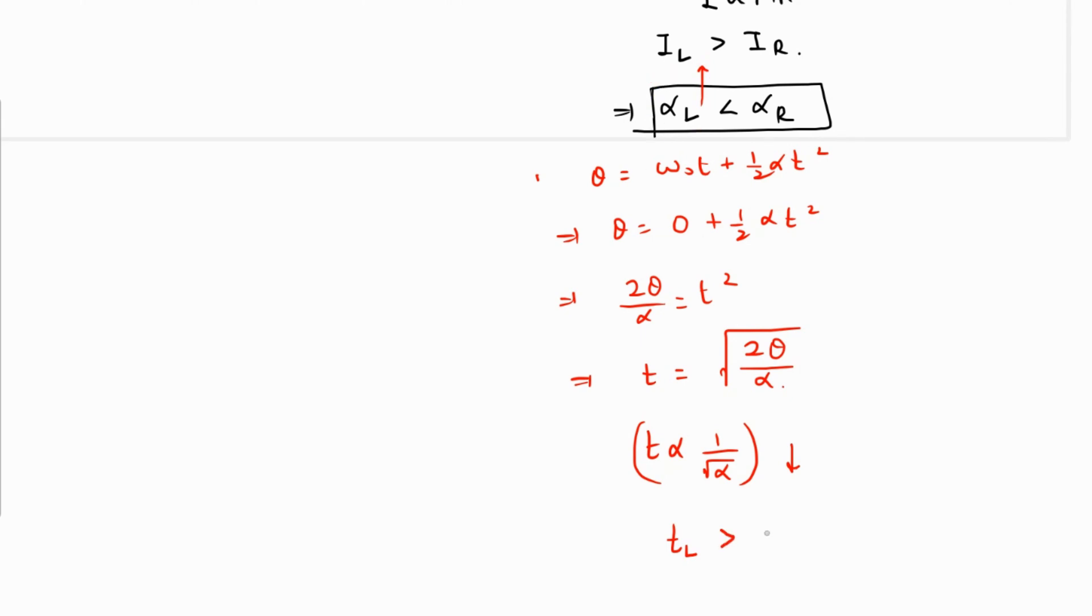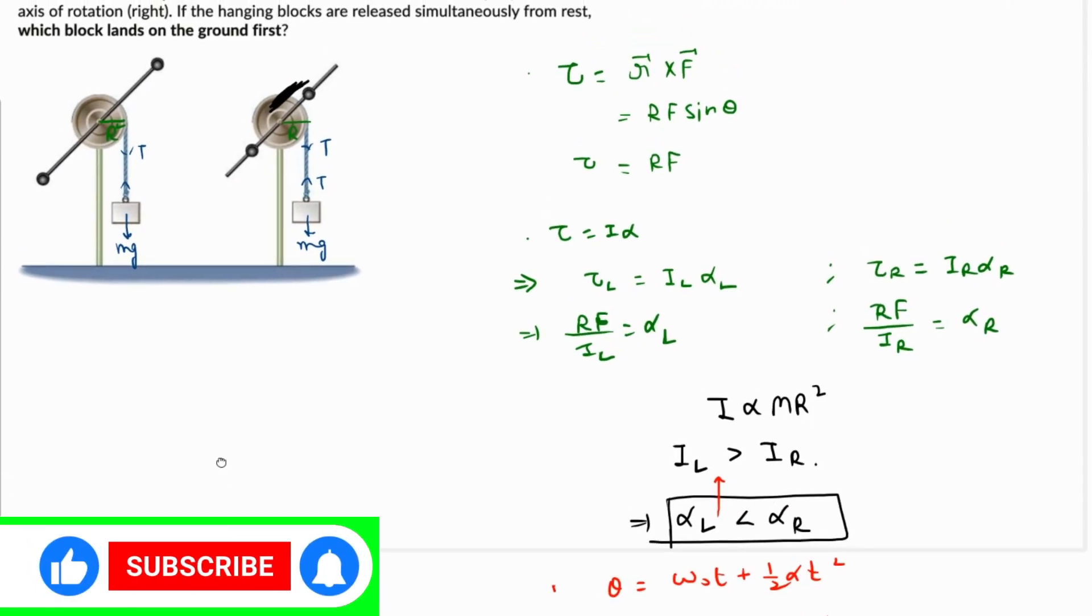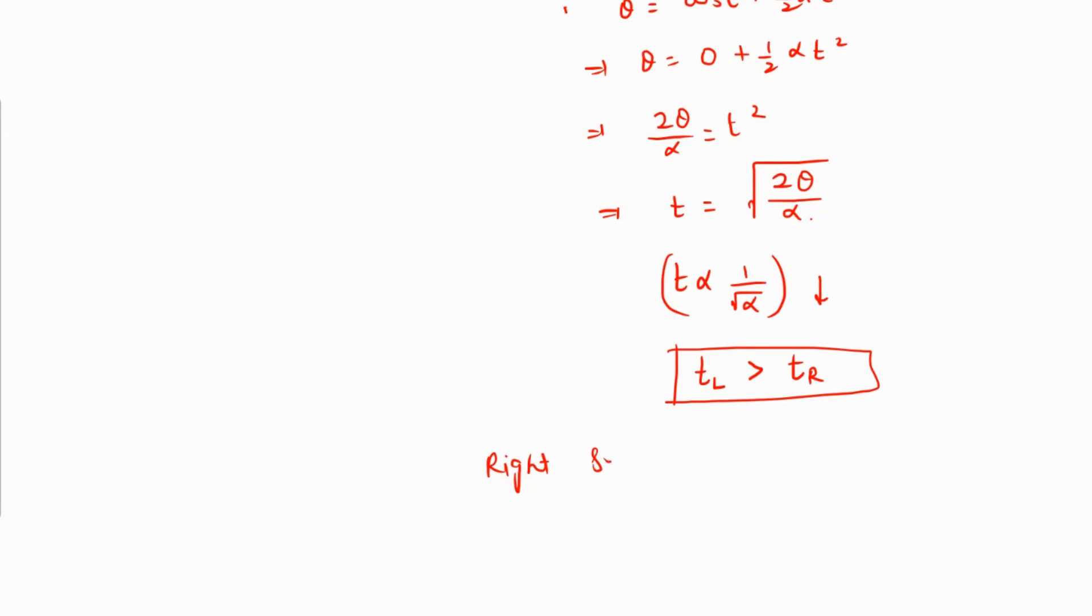The time taken for the left one is going to be greater than the time taken for the right one. Hence, which one will reach the ground first? The right system will reach first because the time taken by it is less.